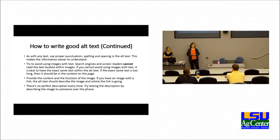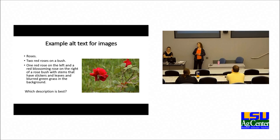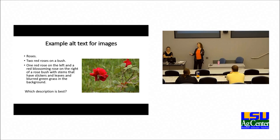Here's an example of alt text for an image of roses. Three possible descriptions: "Roses"; "two red roses on a bush"; and "one red rose on the left and red blossoming rose on the right of a rose bush with stems that have stickers and leaves and blurred green grass in the background." The best description is "two red roses on a bush." If you need a longer description, remember to put that in the content of your article.